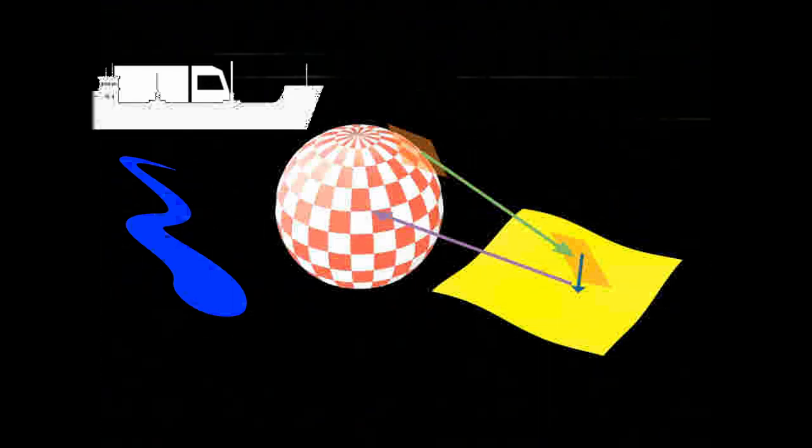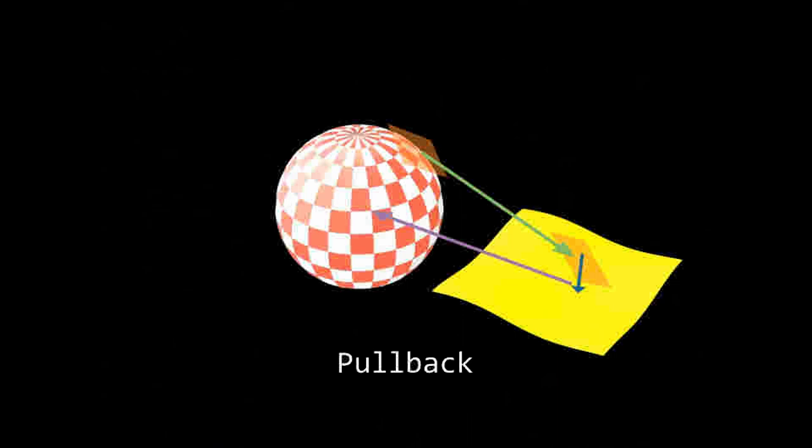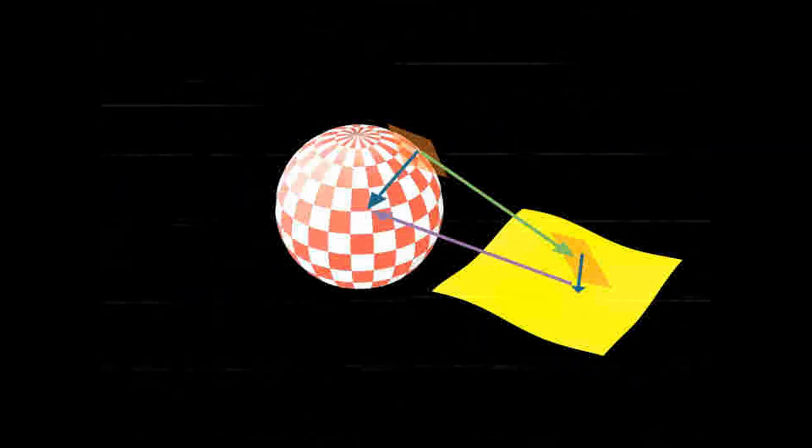And to transfer trucks across water, we will need bigger boats. Our bigger boat will be a portal back to hidden space called a pullback. Finally, we can transfer our tangent vector through the pullback and move your thoughts to safe locations.